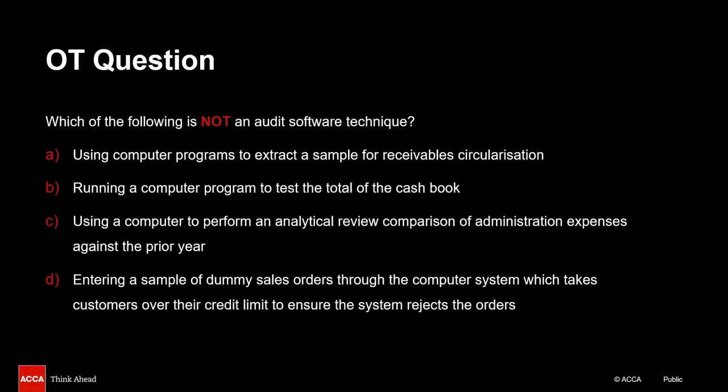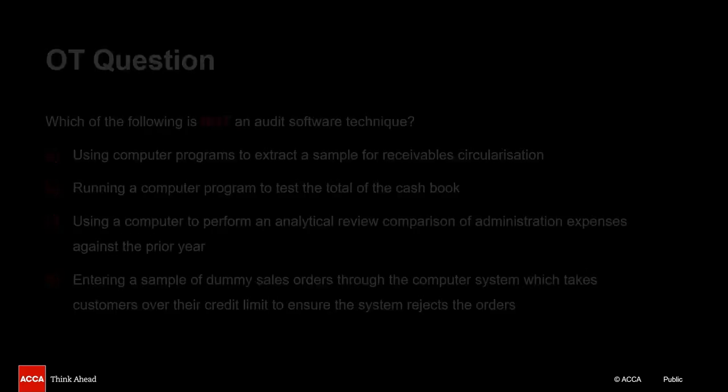Once more, please pause the video, read the question, and then listen to the debrief once you have identified the answer. The correct answer is again D — this is a coincidence. You are entering invalid data to ensure the system rejects it. As long as you know that test data is for system testing, you can identify that the remaining three options are audit software techniques: extracting a sample, checking the total of the cash book by casting, and performing an analytical review. If you got these right, very well done — you are now quite comfortable with a slightly difficult topic.